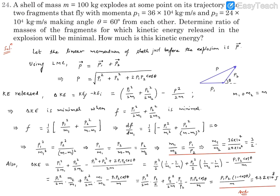Now we need to find the actual value of ΔKE. Since M1/M2 = 3/2 and M1 + M2 = 100 kg, we can solve for M1 and M2 individually. With M1, M2, P1, P2, and M all known, and P calculated from the momentum equation, we can substitute all values into the ΔKE expression.